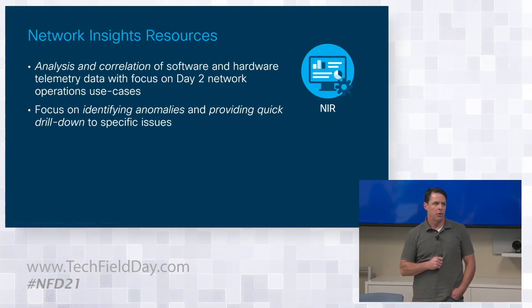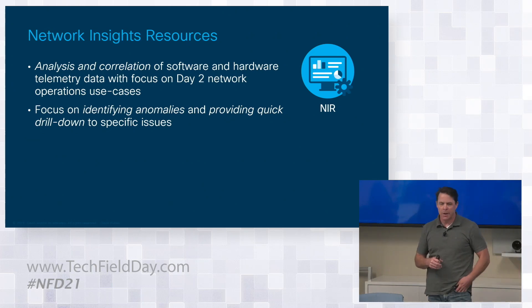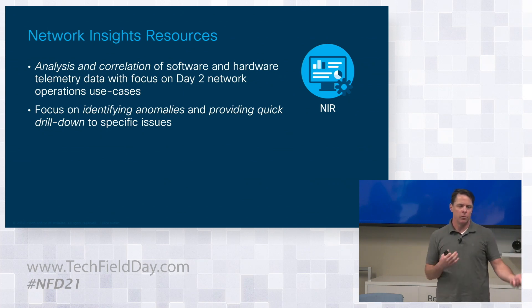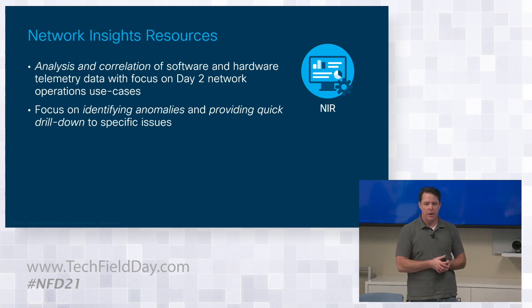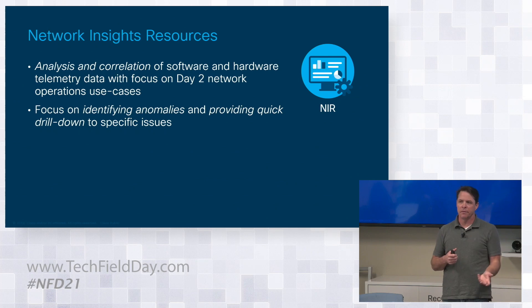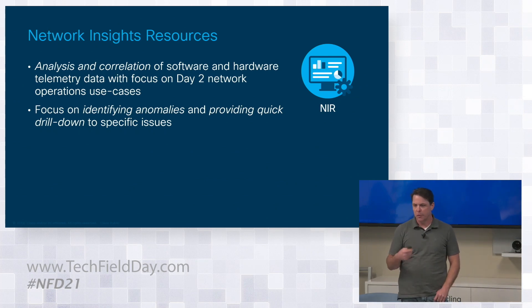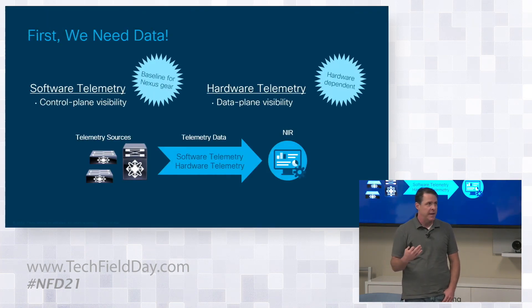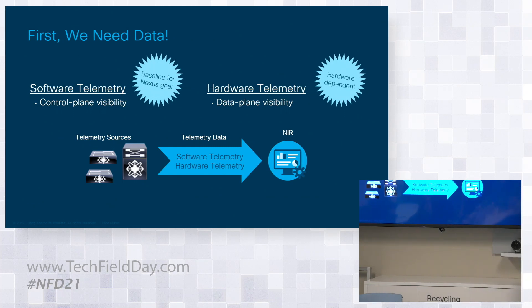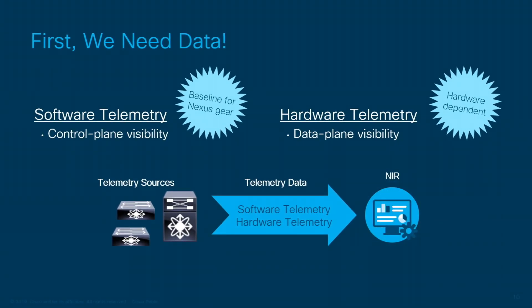Resources is more focused around analysis and correlation of telemetry data. We can collect both software and hardware telemetry. Hardware telemetry has a hardware dependency — some switches support it, some do not — whereas software telemetry is essentially a baseline NX-OS function and pretty much every up-to-date shipping Nexus switch supports streaming software telemetry. The idea is to coalesce all this telemetry data, run analytics against it, and give you insights into what's going on in the network.